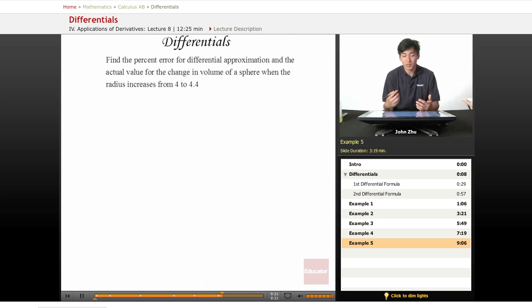Starting with the first step, which we've been doing for the past few examples: the volume of a sphere when the radius increases from 4 to 4.4. We know the original radius.